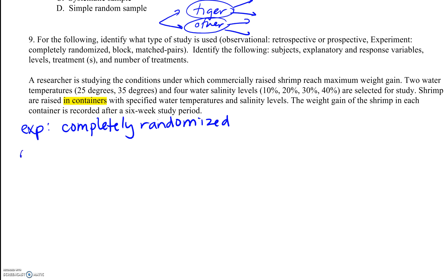Our experimental units are the containers of shrimp. They're raising the containers to specific water temperatures or salinity levels, so technically the containers are what's being assigned to treatments.